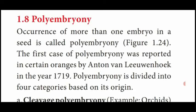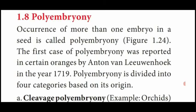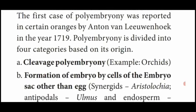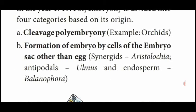The word polyembryony was first reported by the scientist Antony van Leeuwenhoek in oranges in the year 1719. Polyembryony is divided into four categories. First one is cleavage polyembryony - example: orchids (for example Vanda). Another one is formation of embryo by cells of embryo sac other than the egg - this is similar to what we saw in diplospory.